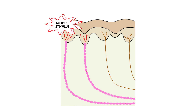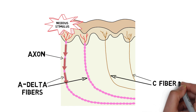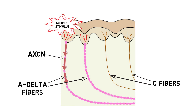When a nociceptor is activated, it generates an action potential that travels along the axon of a sensory neuron. The axons that conduct pain signals generally fall into two categories: A-delta fibers, which are thinly myelinated and transmit signals relatively quickly, and C-fibers, which are unmyelinated and conduct signals more slowly.